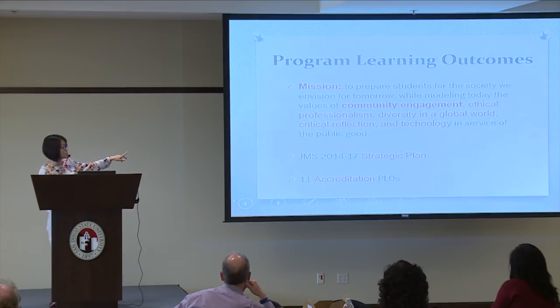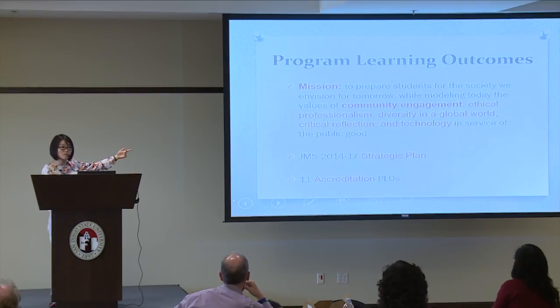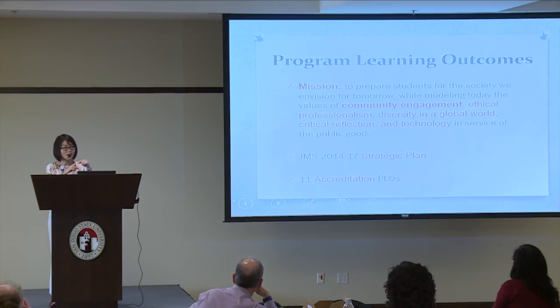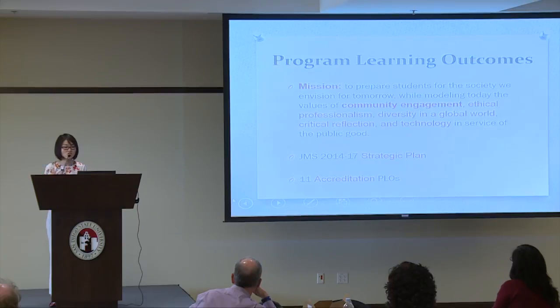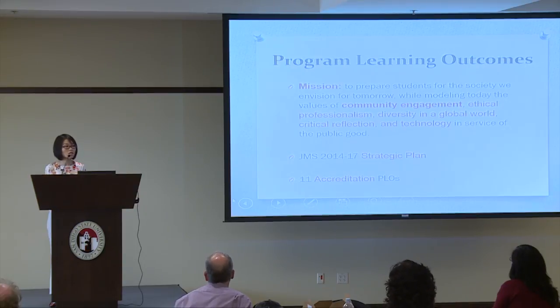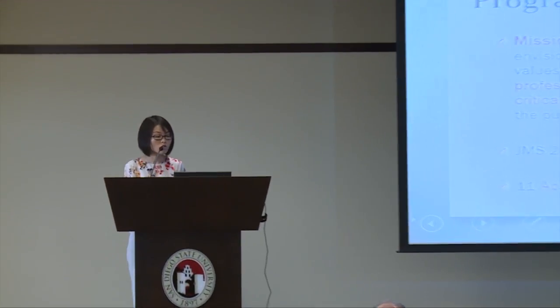We link our 2014–2017 strategic plan to those specific components of our mission, and to our 11 accreditation-aligned program learning outcomes — including upholding the principles of freedom of speech, using statistical reasoning, using theory and concepts, and understanding diversity on a global level. Just to name a few of those 11 learning outcomes. That's the 'what' part: what we are delivering and hope to deliver.